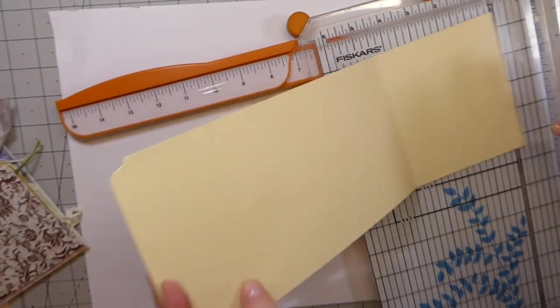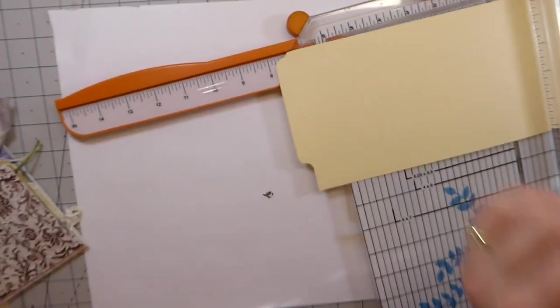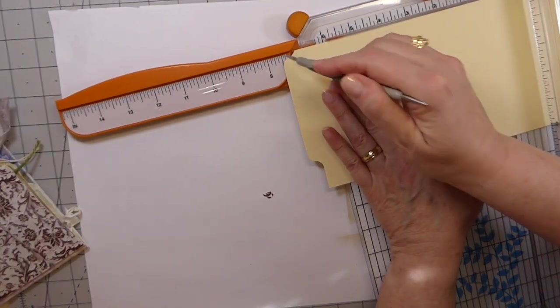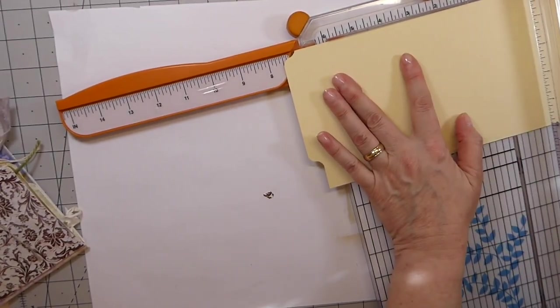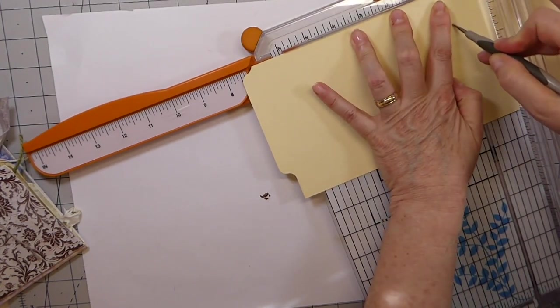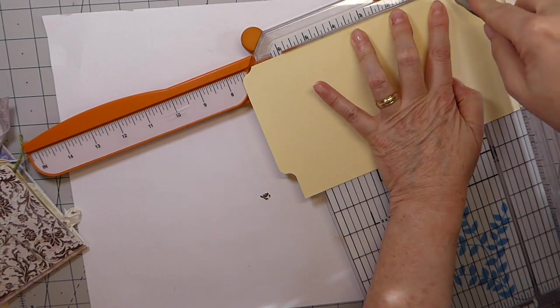And now with this we're going to line it up at seven and a half. If you want to use your scoreboard, but I'm just going to use the paper cutter and I'm just going to put a score line at seven and a half.